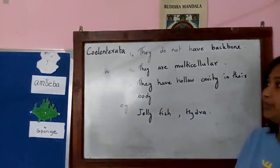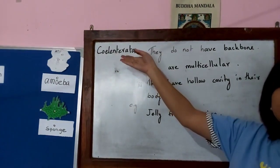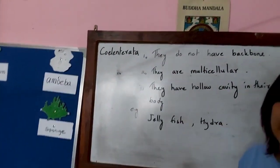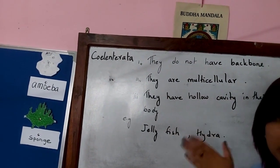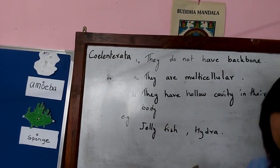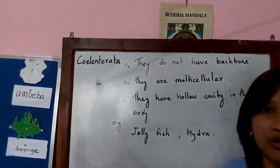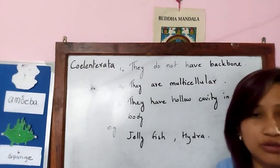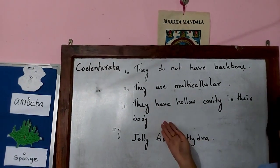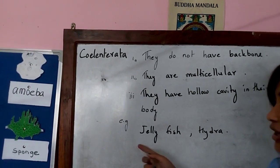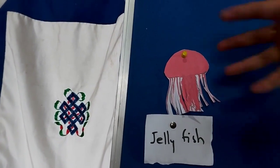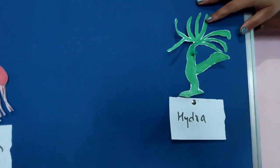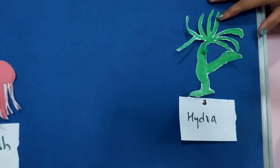The last phylum we will discuss today is Coelenterata. As it comes under invertebrates, they do not have a backbone. They are multicellular, made up of more than one cell. They have a hollow cavity in their body — meaning it is empty inside, with just the presence of air. Examples are jellyfish and hydra. If you look at jellyfish in the picture, it is empty inside — there is nothing. Similarly, hydra — if we see inside, there is nothing present inside.